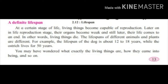At a certain stage of life, living things become capable of reproduction. Later on in life, their organs become weak, and still later their life comes to an end — in other words, living things die. The lifespan of different animals and plants varies. For example, the lifespan of a dog is about 12 to 18 years, while the ostrich lives for 150 years.